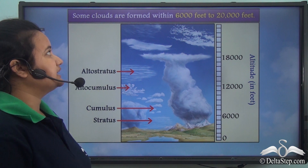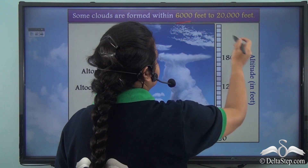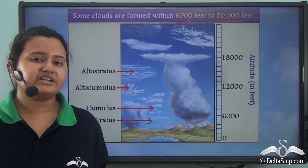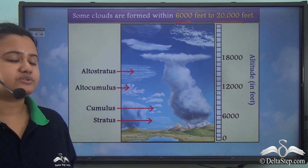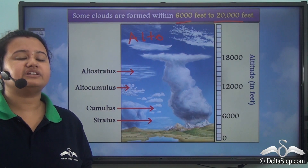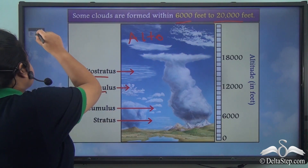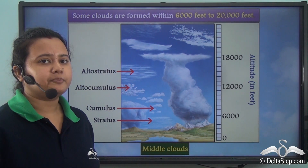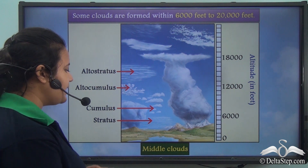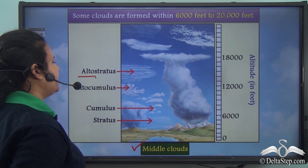There are some clouds that are formed in the middle level of the troposphere, that is within 6,000 feet to 20,000 feet. These clouds have a prefix alto added to their names. Some types of these clouds are alto-stratus clouds and alto-cumulus clouds. Clouds formed within an altitude of 6,000 feet to 20,000 feet are known as middle clouds.